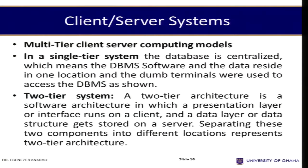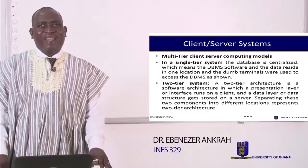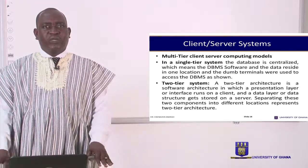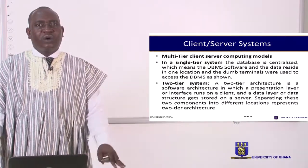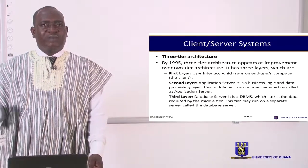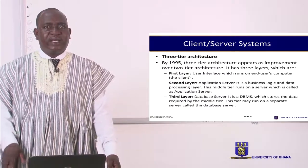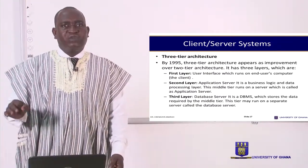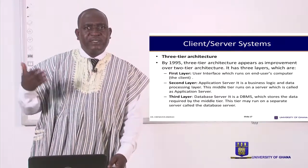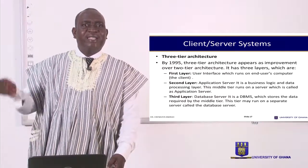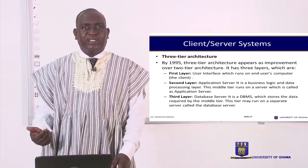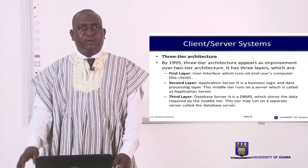In the single tier system, the database is centralized — the database system and data reside in one location. With the two tier architecture, the database has two levels: the interface and the client stations at different levels. With the three tier, we have three levels. The first level has the user interface running on the end user's computer. The second level has the application server containing business logic and data processing. The third level has the database server, forming the complete three tier architecture.